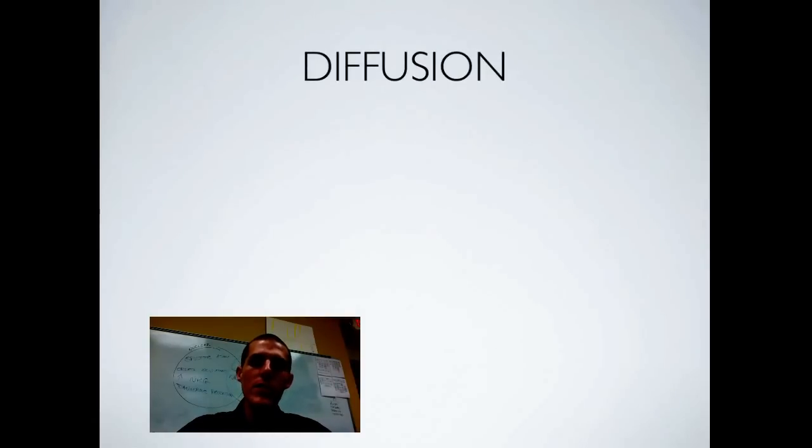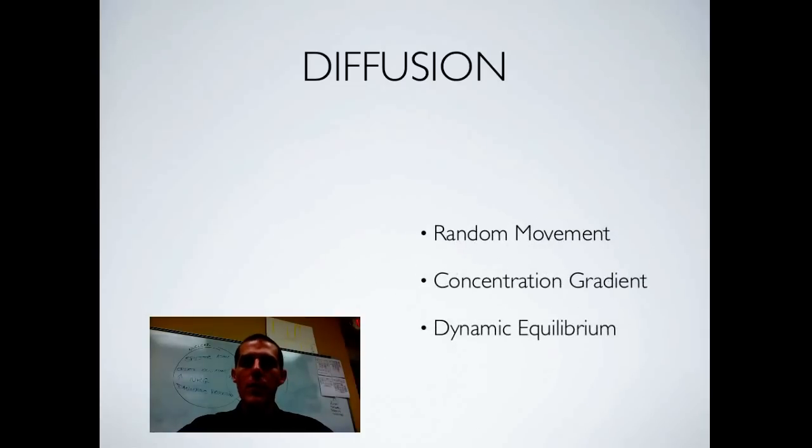A couple of terms that you need to know in starting out with diffusion. Know that diffusion is a product of random movement. Now, when I talk about something diffusing, I mean that you have got some sort of, in our case, cell. It has a membrane around the outside.